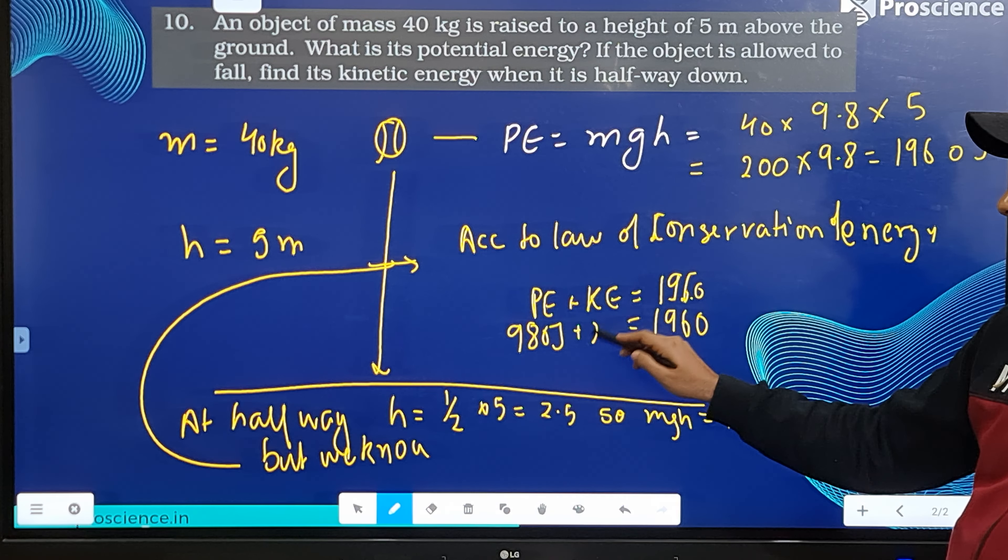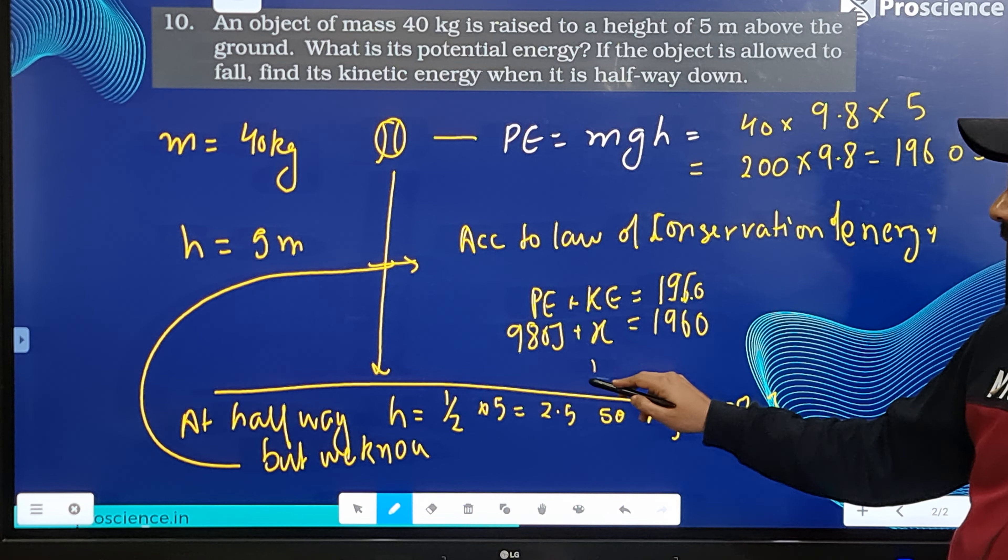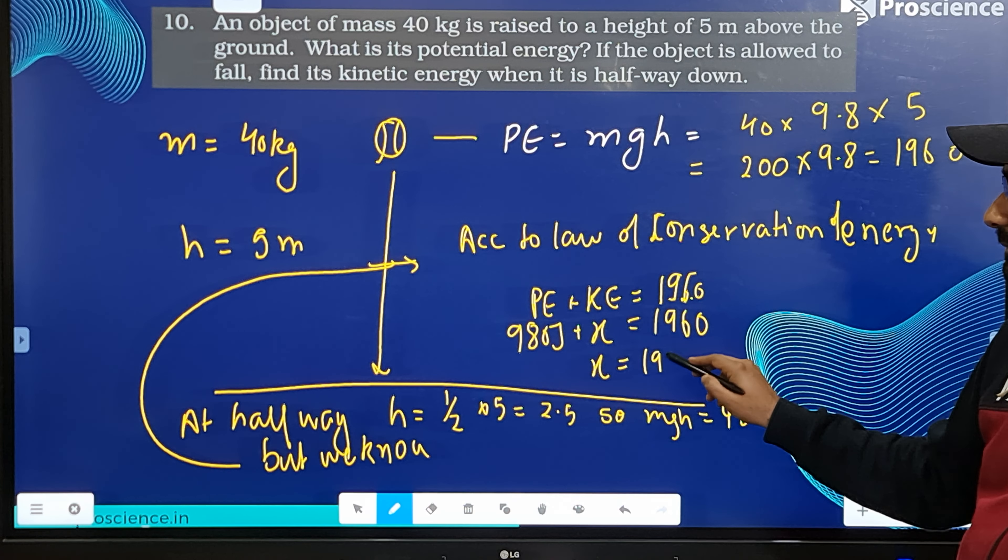What will be x? x will be 1960 minus 980.